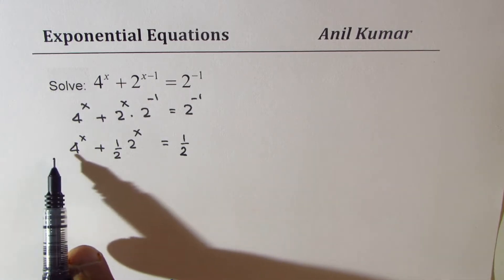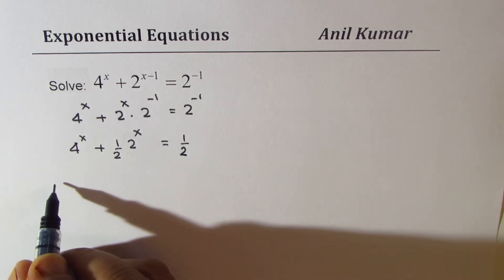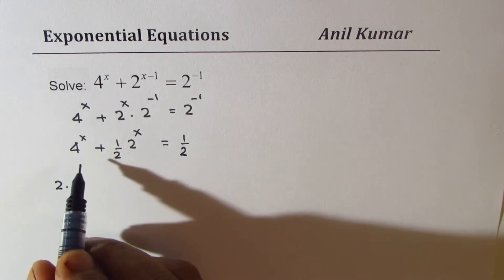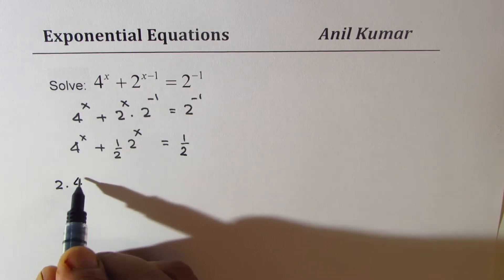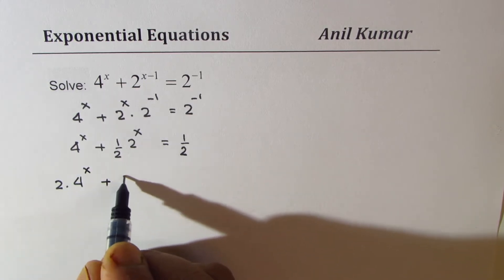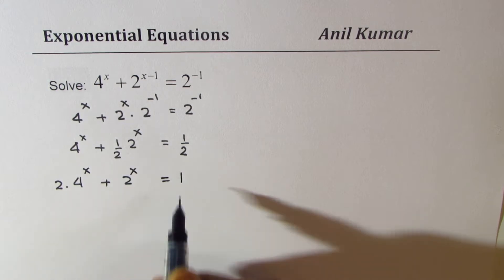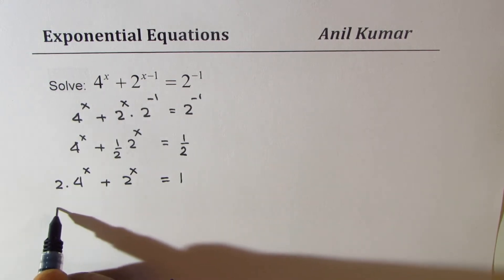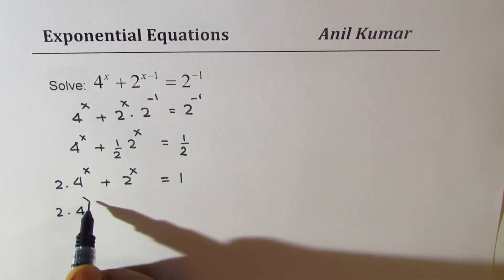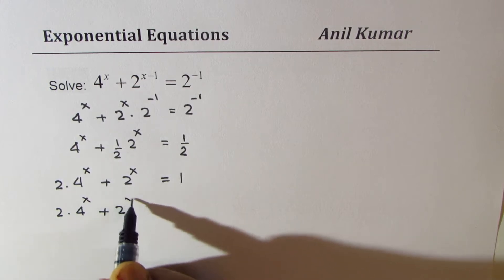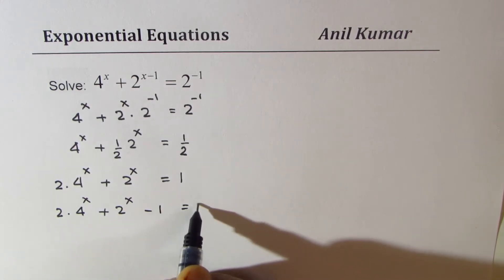Now, we can multiply by 2 and rewrite this as 2 times 4 to the power of x plus 2 to the power of x minus 1 equals 0.